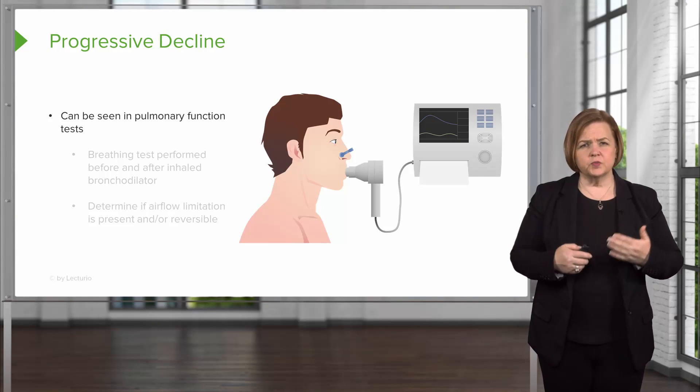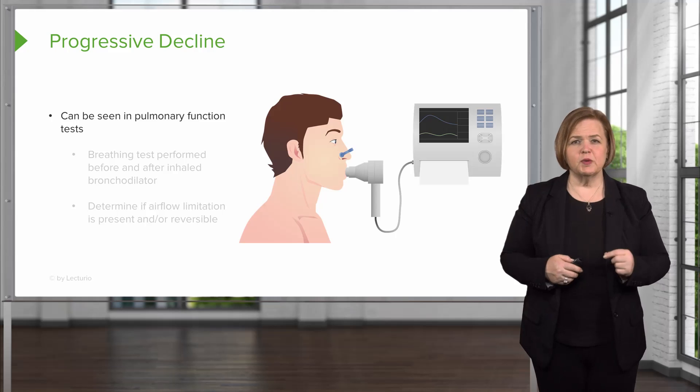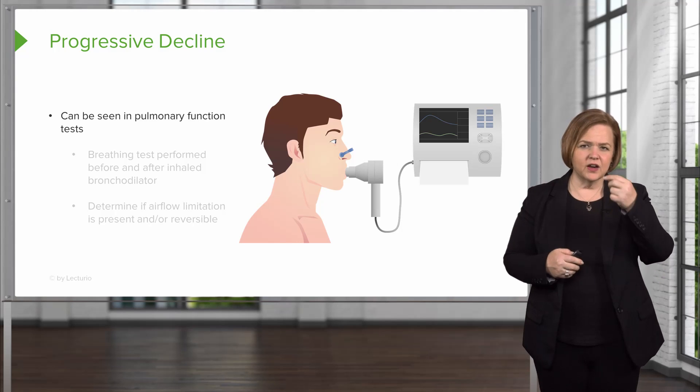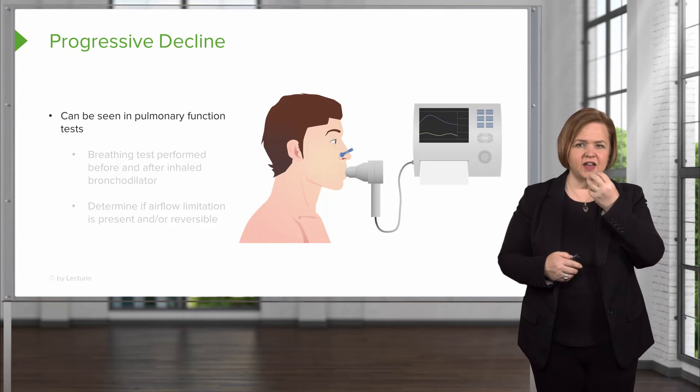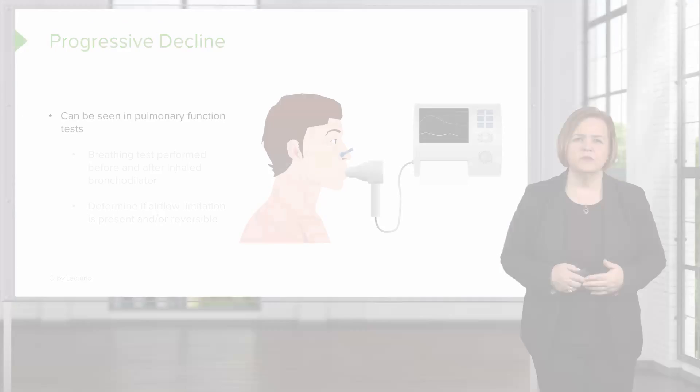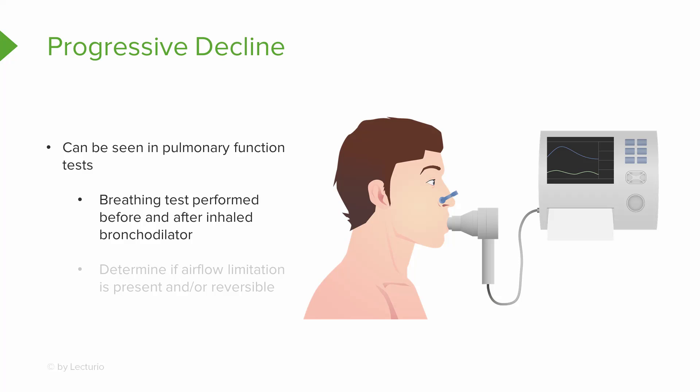Now how do we look at this progressive decline? We talked about pulmonary function tests. You see them there with a clip on their nose and a mouthpiece in their mouth, attached to a piece of equipment. A pulmonary function test consists of breathing tests that they perform before and after a bronchodilator. They'll do the test, then give the patient an inhaled bronchodilator, and figure out if the airflow limitation is present and whether it's partially or fully reversible.